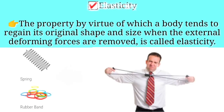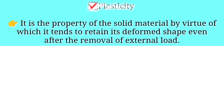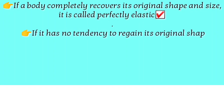For example, rubber band and steel are examples of elastic bodies. Plasticity is the property of a solid material by virtue of which it tends to retain its deformed shape even after the removal of external force. Plasticity is the opposite nature to elasticity. When you put a force on the object and remove it, the body does not regain its original shape. Examples of plastic bodies are wax and clay.